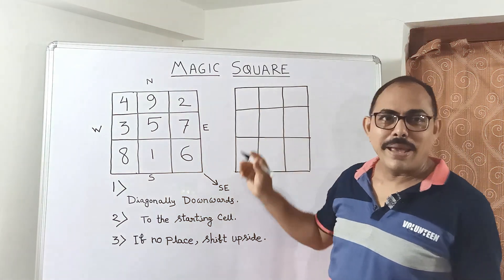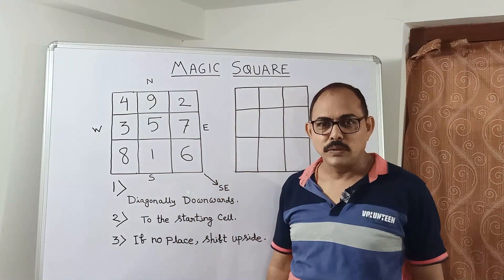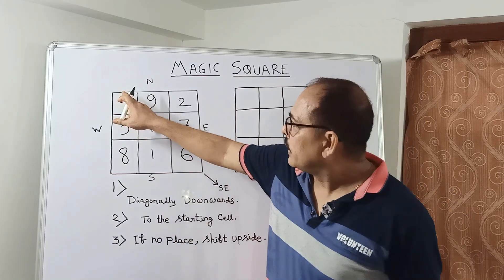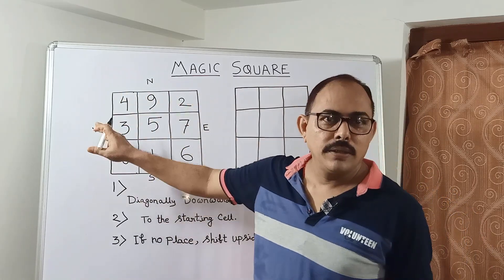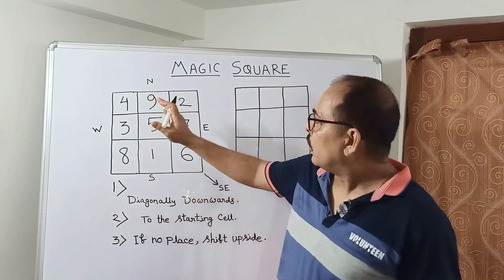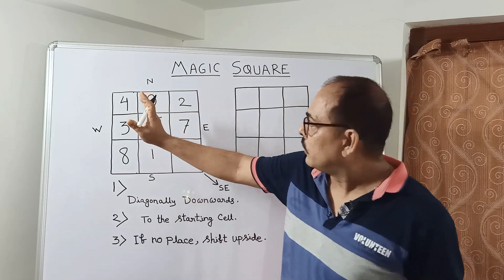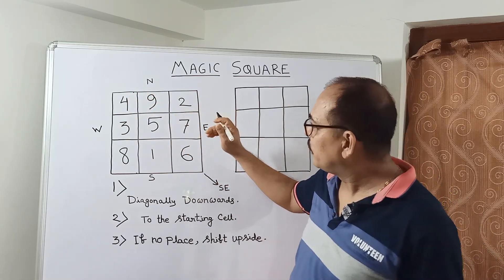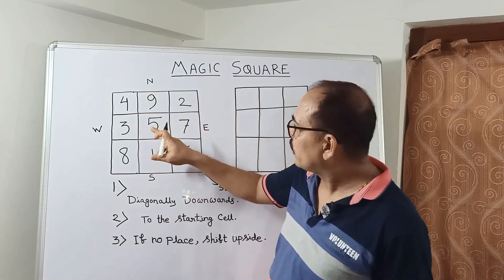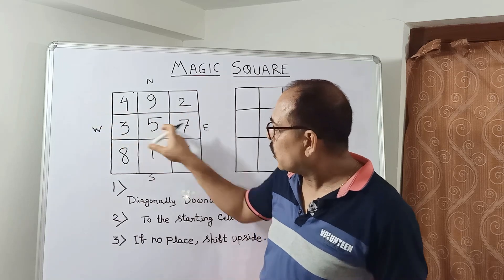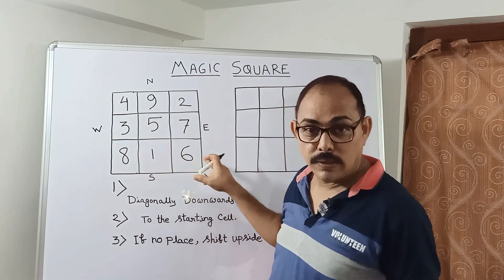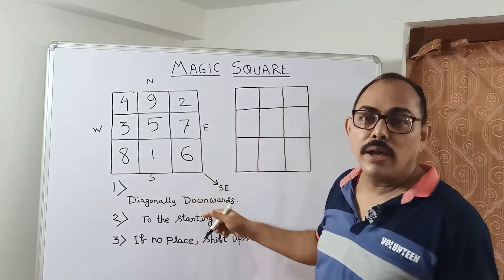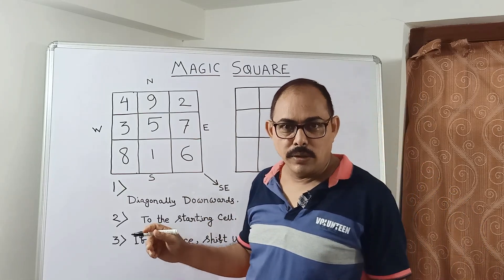Today we are going to learn magic square. What is a magic square? A magic square is a grid. Today we are taking the example of a 3 by 3 order magic square. What do we mean by 3 by 3 order? If there are 3 rows and 3 columns, it is a 3 by 3 order magic square.